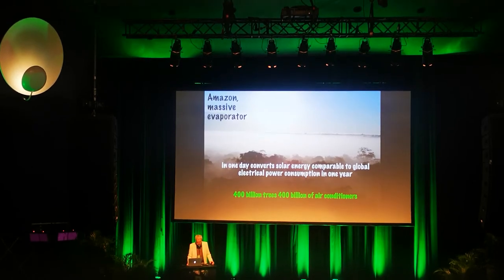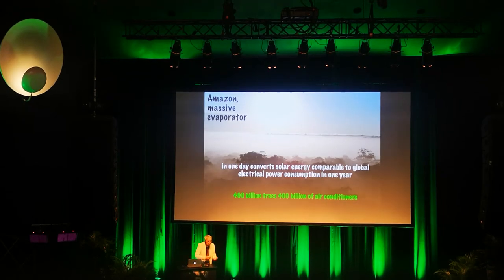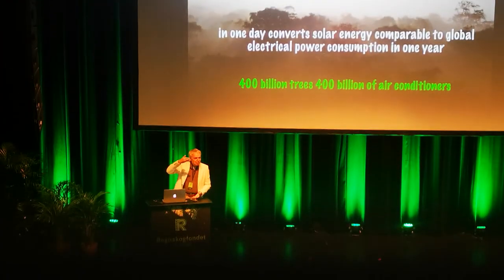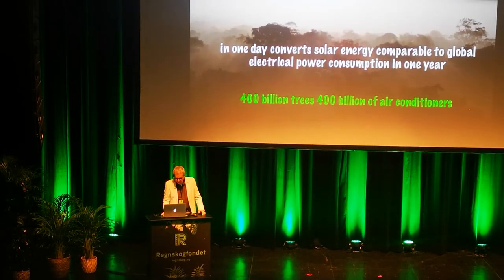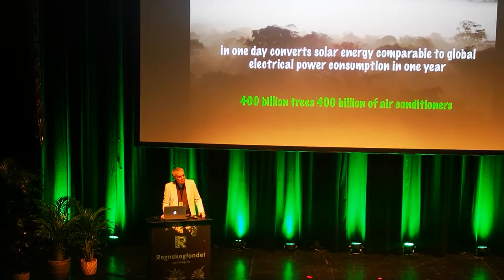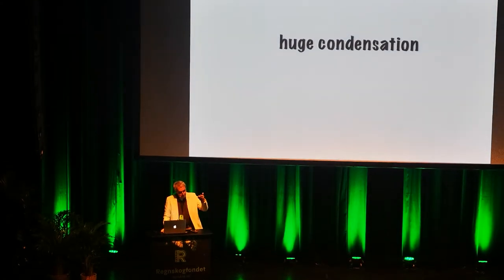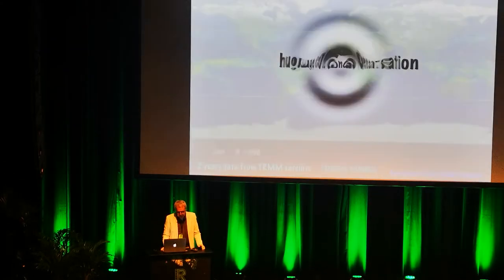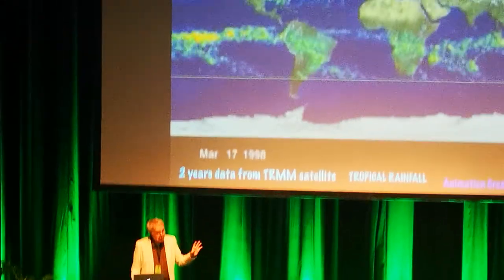We have 400 billion trees — 400 billion air conditioners — because when water evaporates on the surface it harvests heat, and then when it rises in the atmosphere it releases that heat, cooling the planet.